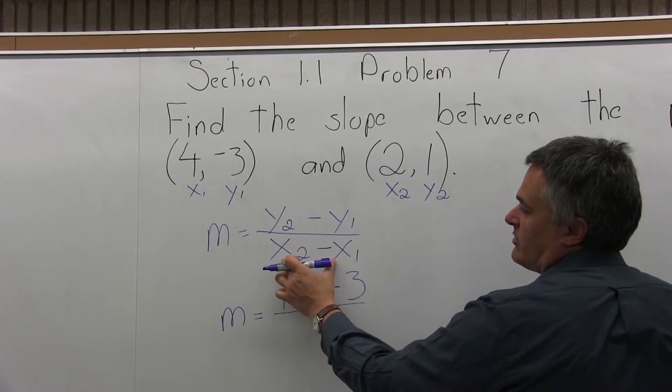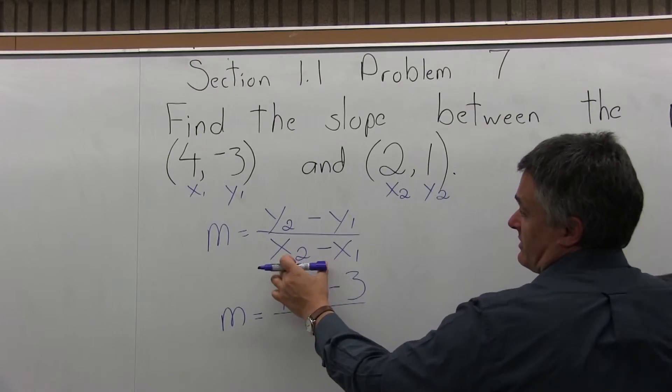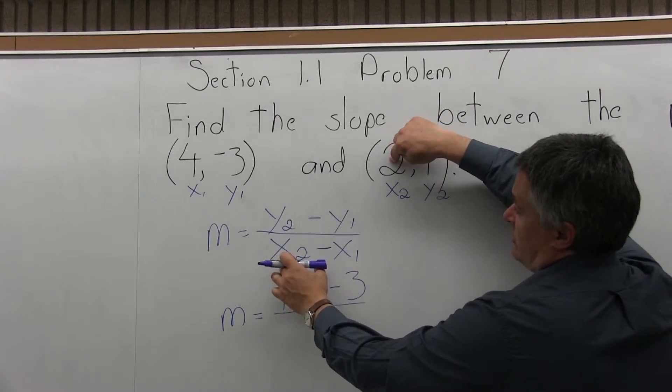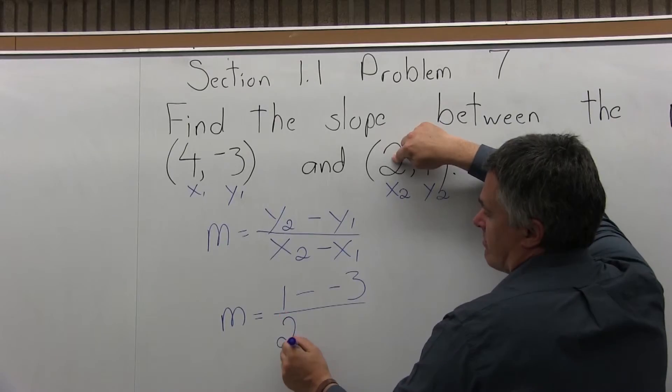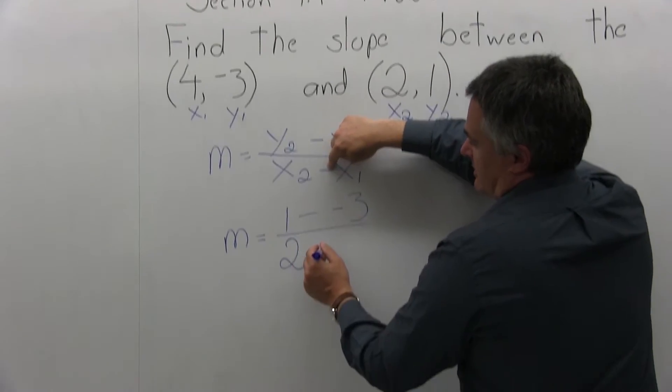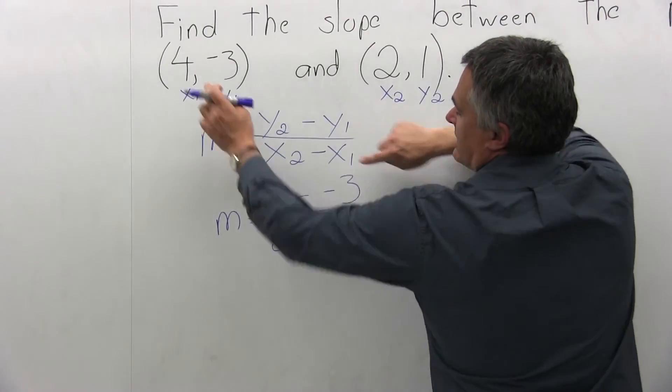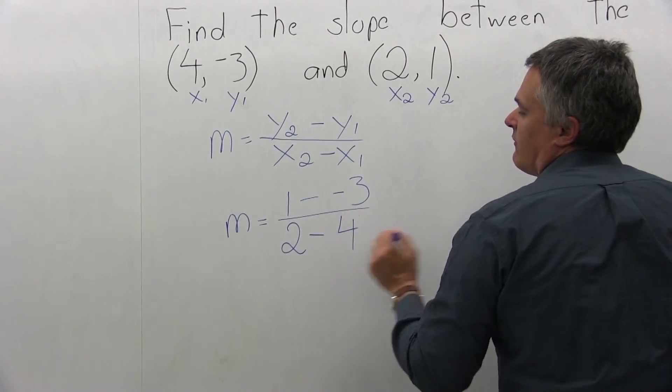In the denominator, you have x2 is the first thing you're going to plug in. x2 has a value of 2, minus x1 has a value of 4.